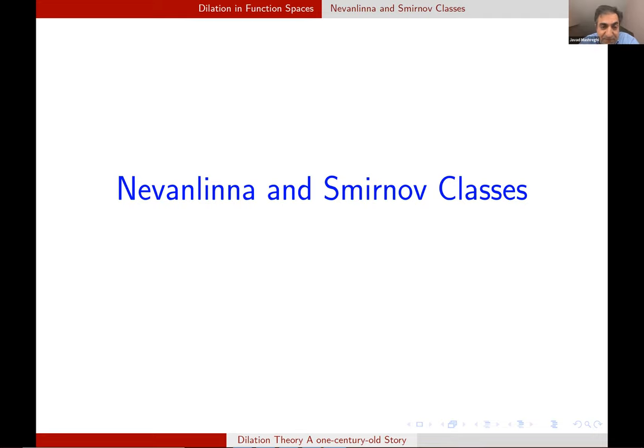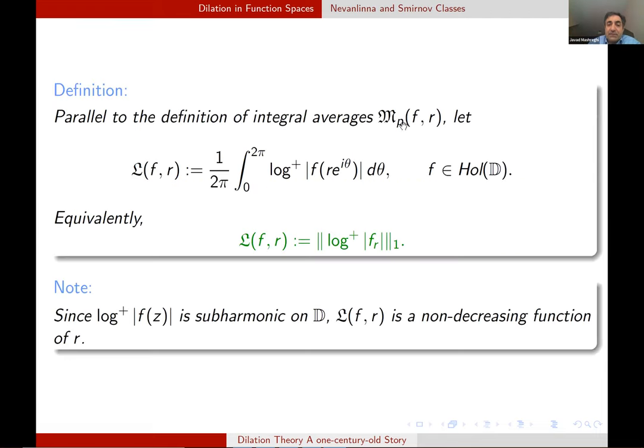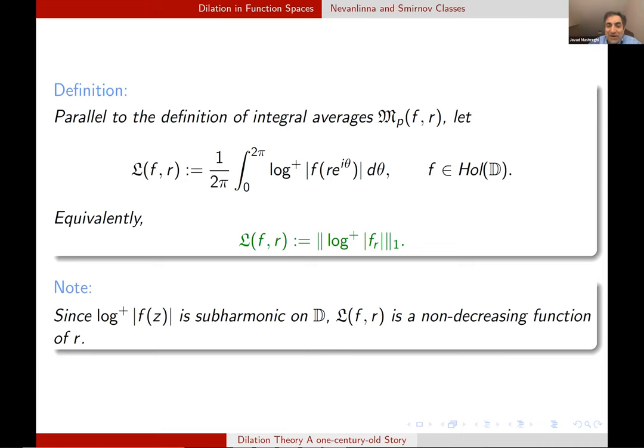But this finishes our classical setting of H^p. And now we go to other spaces. The first one is Nevanlinna and Smirnov classes. As parallel to the definition of M_p that we saw in Hardy spaces, we consider this quantity and write it as L one norm of this log plus of the dilation. This quantity is again, something increasing or better to say, non decreasing function of R. So as in the case of Hardy spaces, we can consider either the supremum or the limit. And if this quantity is finite, we call it a member of the Nevanlinna space.